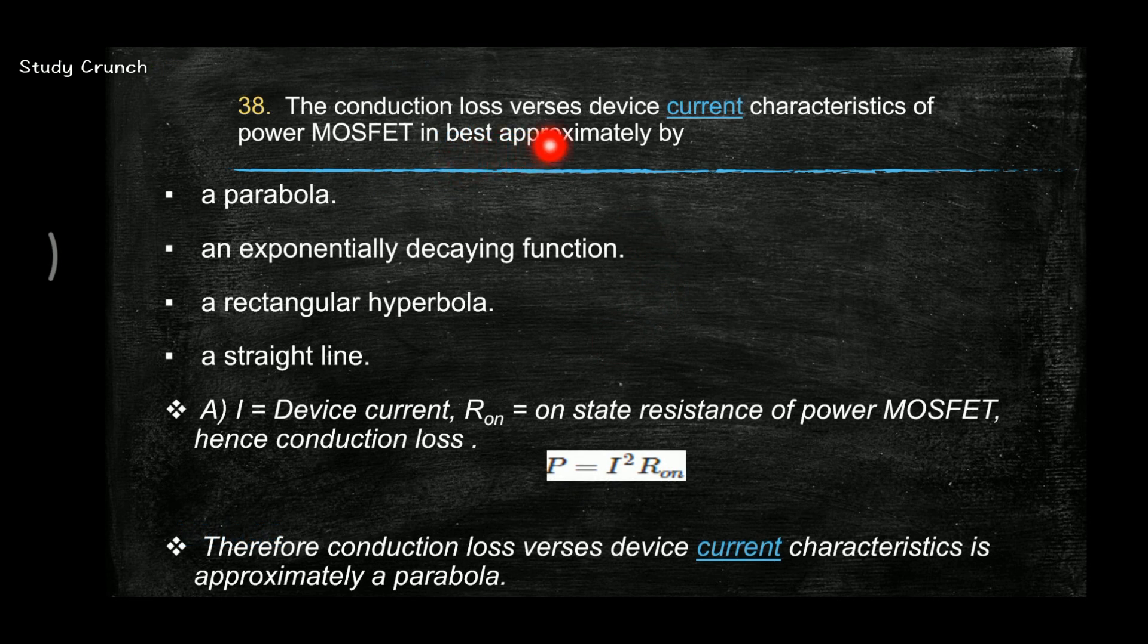Next, the conduction loss versus device current characteristics of power MOSFET is best approximated by? Answer is A, that is parabola. I is equal to device current, R on is the on state resistance of power MOSFET, and hence the conduction loss is equal to I square R. Therefore, the conduction loss versus device current characteristic is approximately a parabola because it is I square R.